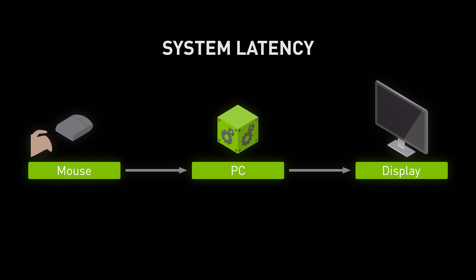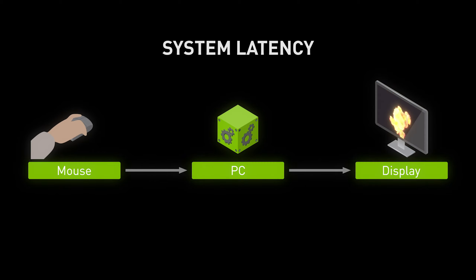The second type of latency is local or system latency, which includes things like input processing, your game engine, rendering, and ultimately display.